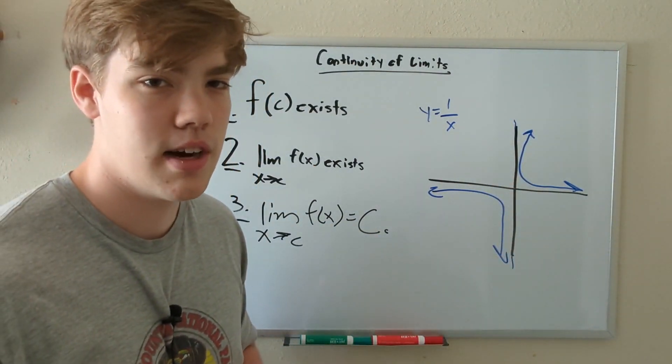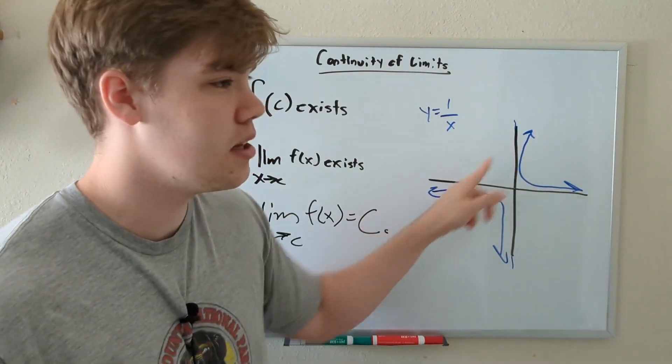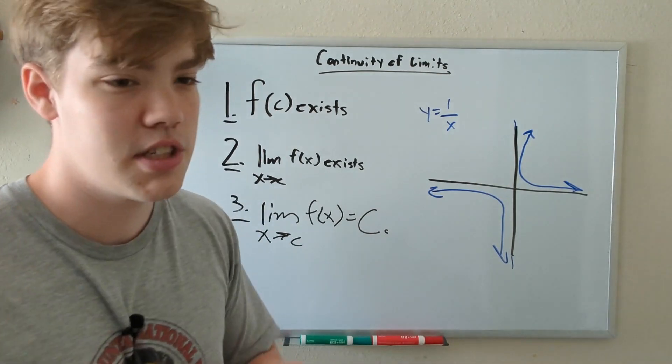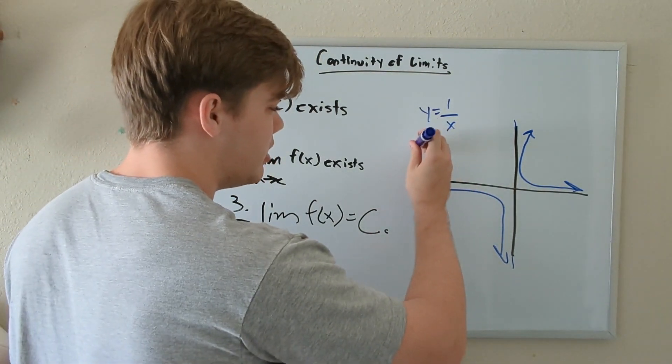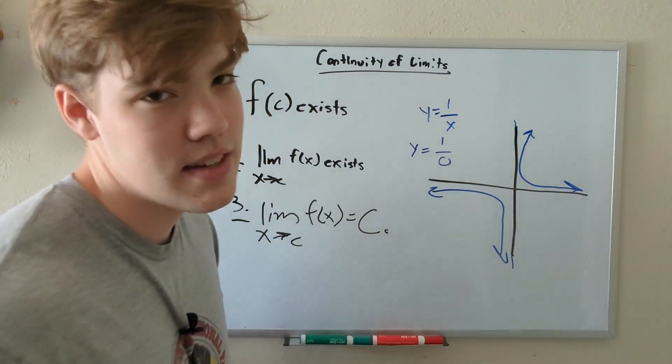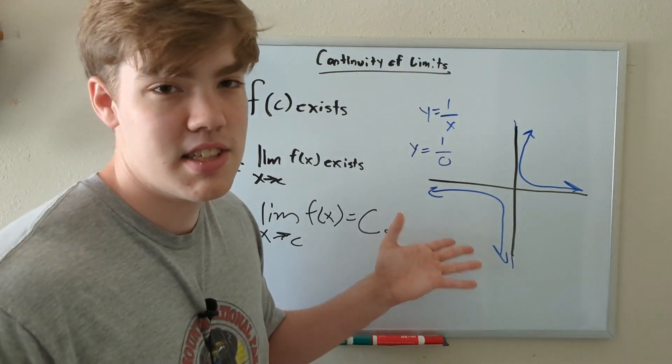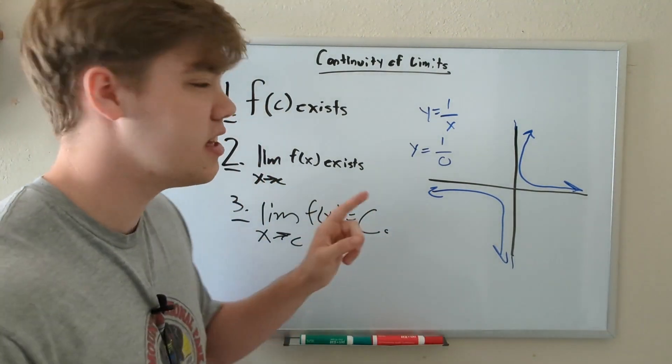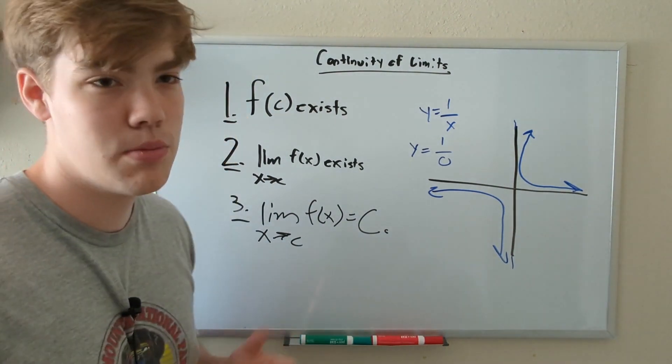Is this function continuous at X equals zero? Doesn't look like it to me. It seems to be avoiding the Y axis entirely, both in the bottom left and top right. But just to prove that to you, without you just having to trust my visual here, let's say we tried to put in Y equals one over zero. Well, we can't divide by zero and that will never change. So yeah, F of C doesn't exist here. And therefore we already broke the first rule, meaning that this function is not continuous.